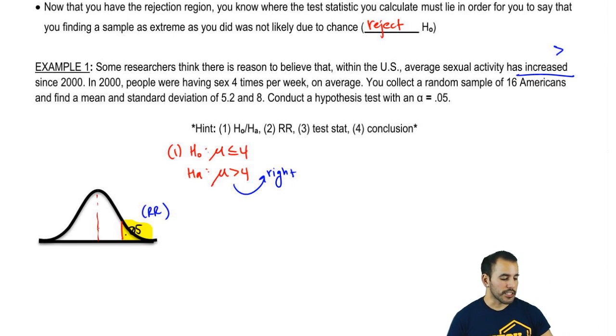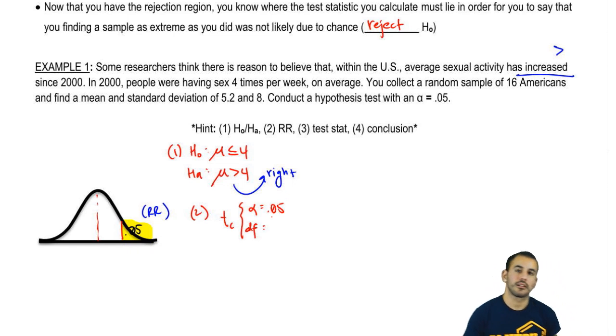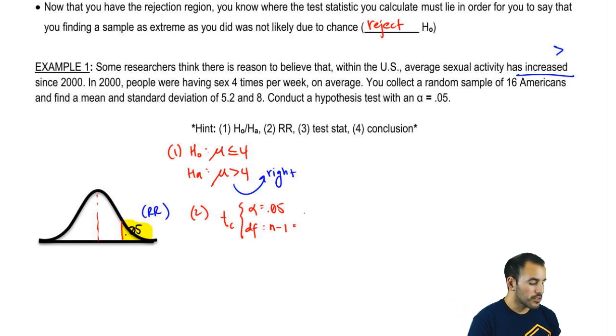So our next step is to get that rejection region. We need a t-critical that is based off of two pieces of information. One of them is alpha. And do we have to do anything to that alpha in this case? No, because we're not doing a two-tail. So it's the full alpha because our t-table works off of this area here from the number all the way up. So all we need is the alpha, which in this case is .05. And degrees of freedom is just like we saw before. It's n minus 1. So degrees of freedom of n minus 1, that's 16 minus 1 or 15.